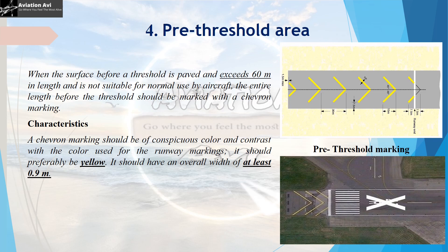Lastly, let us look at the pre-threshold area. When the surface before the threshold is paved and exceeds 60m in length and is not suitable for normal use of aircraft, the entire length before the threshold should be marked with a chevron marking. This is the area before the threshold, and since it exceeds 60m in length, there is a chevron marking painted here. The chevron marking should be of a conspicuous colour and should be in contrast to the marking used on the runway. It should preferably be yellow and should have an overall width of at least 0.9m. The other specifications of this chevron marking are given in the image.